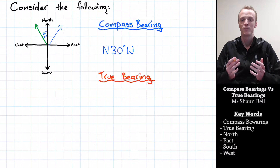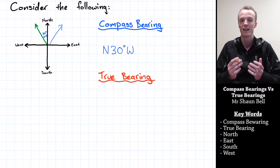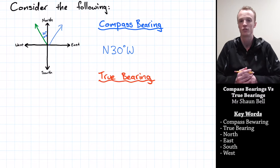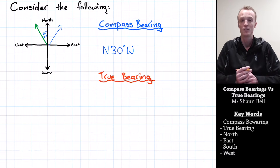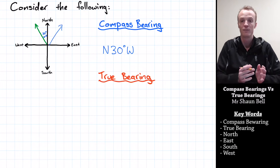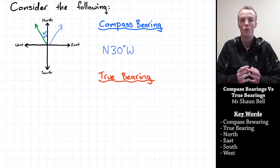In this case it's in the West direction, so we put a capital W afterwards. We've now successfully indicated the compass direction: it's closer to North, 30 degrees from North towards the West.